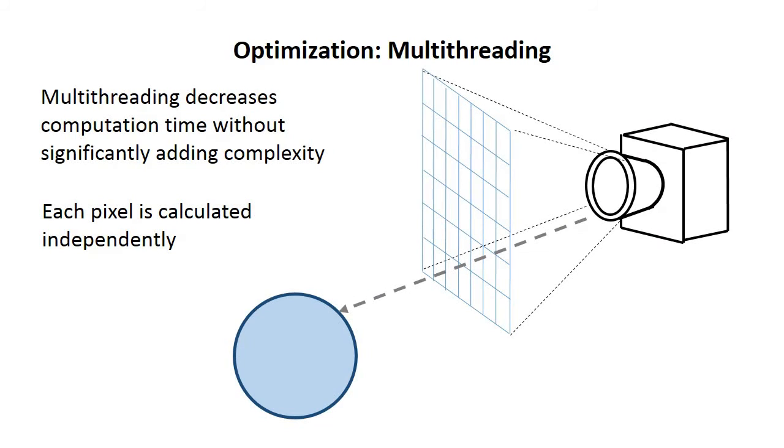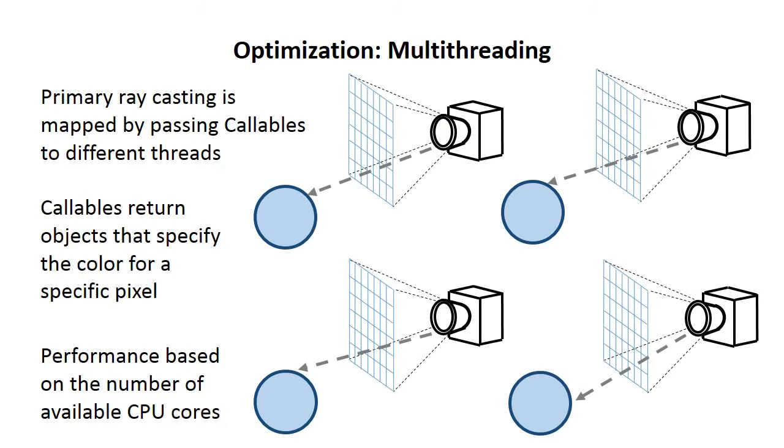The next thing I want to talk about is optimization, or how we make this whole process go faster. The first one that we use is multithreading. Multithreading is nice because it decreases computation time without significantly adding complexity to our system. Since each pixel is already calculated independently, it makes it pretty straightforward to move the same raycasting operations onto multiple cores. In Java, we do this using callables, which can be assigned to a thread. They run, and when they finish, they return a value.